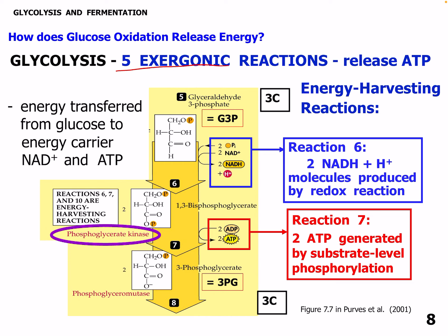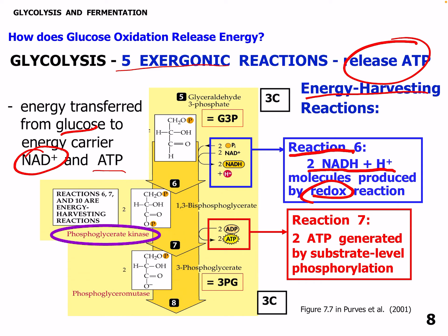Glycolysis also has five exergonic reactions where we release ATP — these are the energy-harvesting reactions. Energy is transferred from glucose to the energy carrier NAD+ and ATP. In reaction 6, two NADH and hydrogen ion molecules are produced by a redox reaction — two phosphates and NAD+ go in, two NADH come out. In reaction 7, two ATP are generated by substrate-level phosphorylation. This kinase is specifically named phosphoglycerate kinase, dealing with 3-phosphoglycerate. Reactions 6, 7, and 10 are the key energy-harvesting reactions.